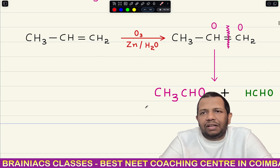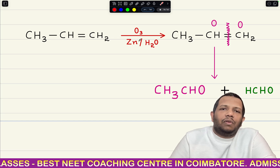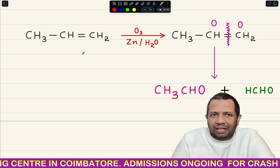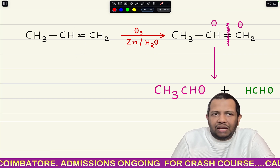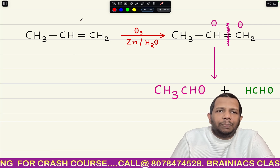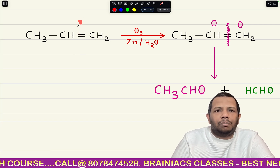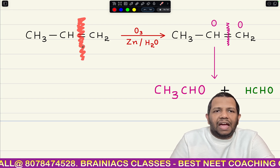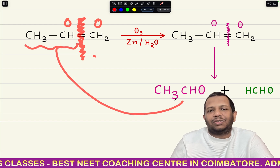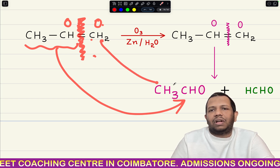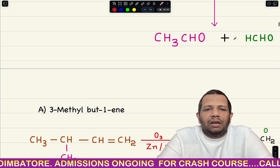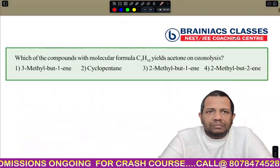Now I'll explain the shortcut trick you can apply in your NEET exam. Whenever you are doing ozonolysis, it happens across the pi bond or unsaturation. Here the carbon-carbon pi bond is present, so addition occurs there only. What you need to do is just break the pi bond and the sigma bond completely, then distribute oxygen on both sides. You will get CH3CHO on one side and HCHO on the other side — very fast.